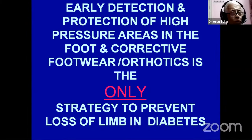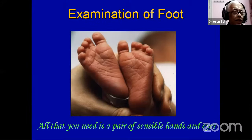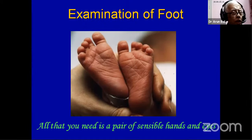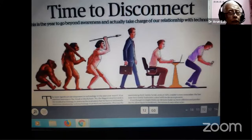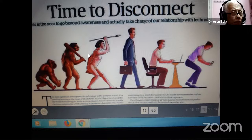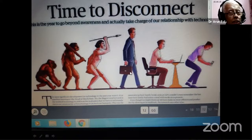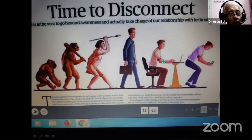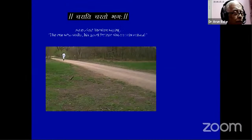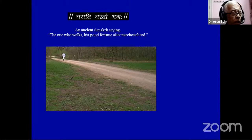When we have millions of patients, footwear is the only strategy to prevent limb loss in diabetes in Southeast Asia. What you need is a pair of eyes and hands — no technology. On a lighter note, as more and more mobiles are used — India has 750 million mobile users — when human beings became erect, biomechanics changed; are we going to reverse that with our use of technology? I'd like to end with this famous Sanskrit saying: 'One who walks, fortune marches ahead.' We want all those millions of patients' fortunes to march ahead, so we need to keep their feet intact. Thank you.